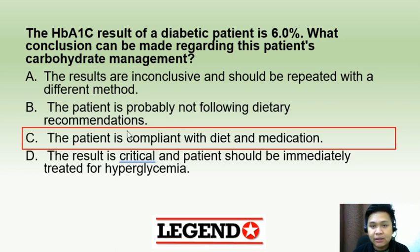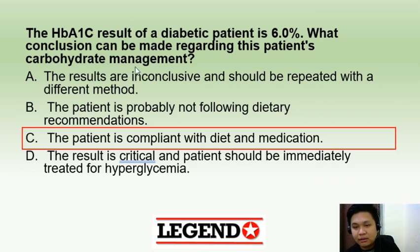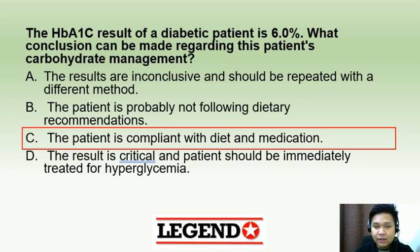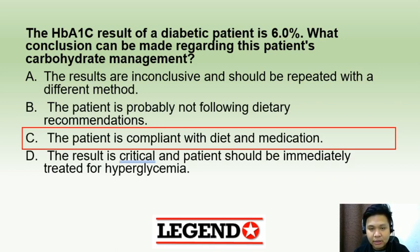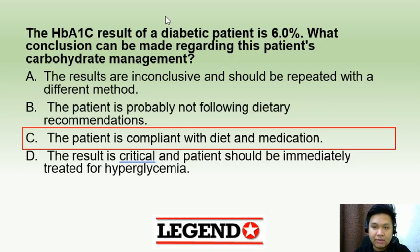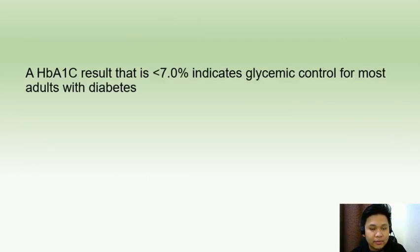An HbA1c result of 6.0% for a diabetic patient — what conclusion can be made? The correct answer is letter C: the patient is compliant with diet and medication. For a patient already diagnosed with diabetes, the HbA1c target is less than 7%. An HbA1c result less than 7% indicates glycemic control, according to the American Diabetes Association.